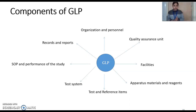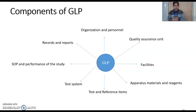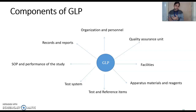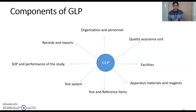In Good Laboratory Practice there are different components. The first is Organization and Personnel. This means that whatever persons are required to run a particular lab, there should be a sufficient number — your study director should be there, your investigator should be there, and according to the lab's requirements, you should have all the persons for those experiments. You should also have people to organize things outside the lab. All of this is required to get GLP certification.